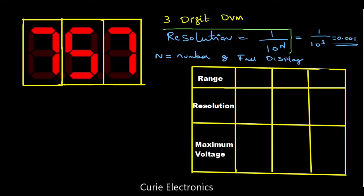This resolution is fixed for the instrument — there is no change. It is fixed for the instrument. But with the selected range, we will get different resolutions. We will see that.